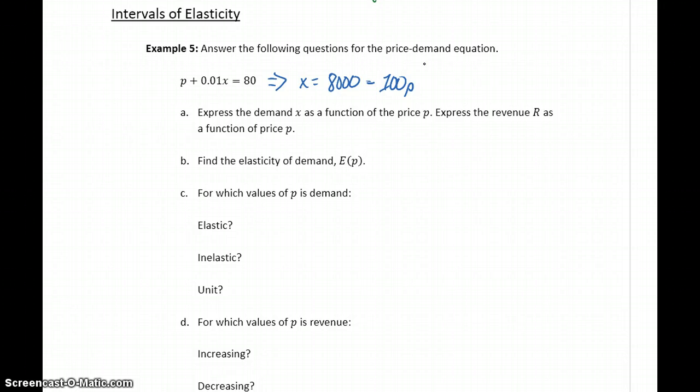And we're also asked to express the revenue as a function of price. So keeping in mind that revenue is always price times demand, here we can substitute this function that we have for x and distributing that p through, we'll get 8,000p minus 100p squared. So we have our price-demand function and our revenue function, both as functions of p.